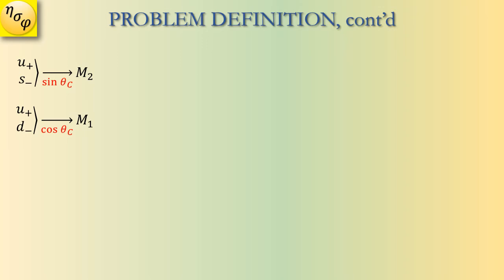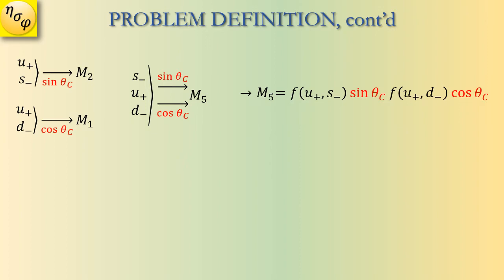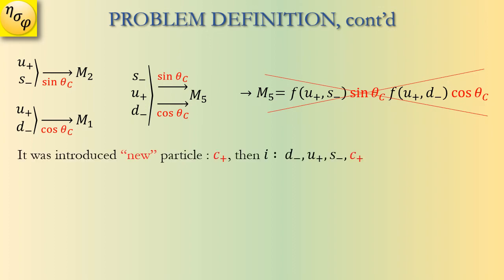Rewriting the results selected from the previous slide, we now move on to a composite reaction that involves s-minus, u-plus, and d-minus. The corresponding mathematics for m5 is shown on the screen. However, this doesn't match with the experiment.